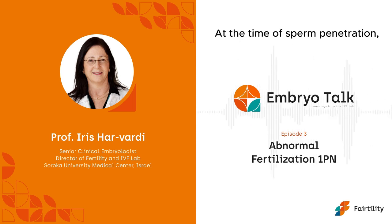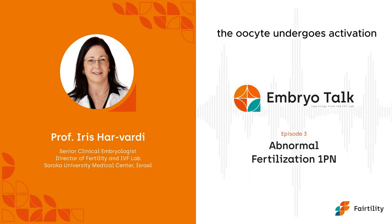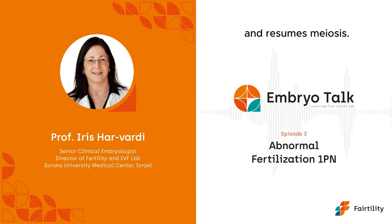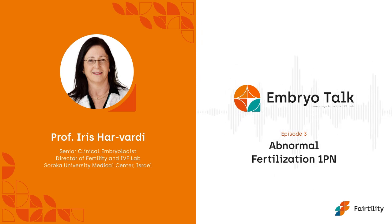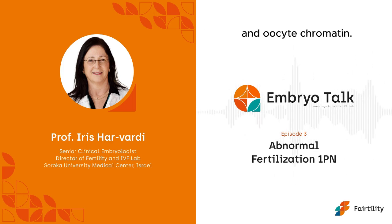At the time of sperm penetration, the oocyte undergoes activation and resumes meiosis. Following this step, two pronuclei develop from the sperm and the oocyte chromatin.